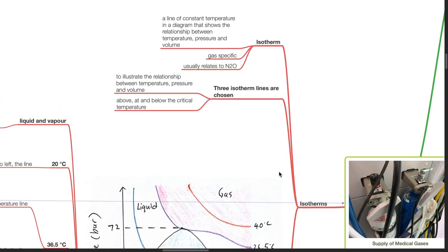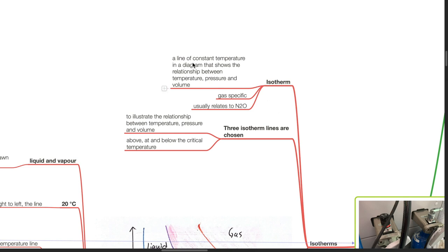Isotherms: An isotherm is a line of constant temperature in a diagram that shows the relationship between temperature, pressure and volume. It is gas specific and usually relates to nitrous oxide.